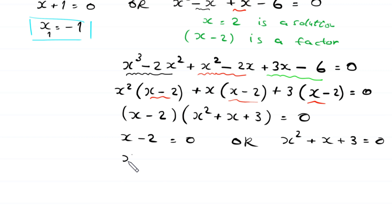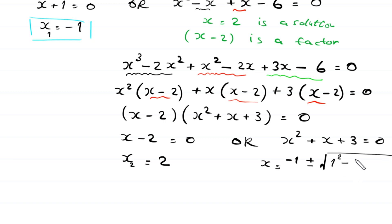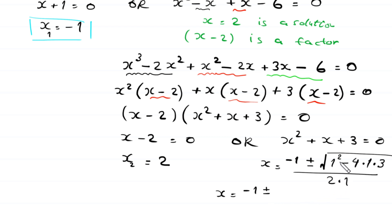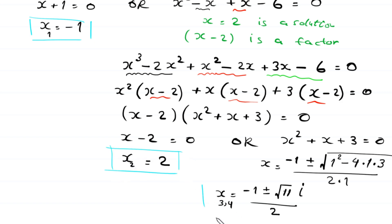From here either x minus 2 equals 0, giving the second solution x equals 2, or x squared plus x plus 3 equals 0. Applying the quadratic formula: x equals negative 1 plus or minus the square root of 1 squared minus 4 times 1 times 3, all divided by 2. This gives x equals negative 1 plus or minus root 11 times i, divided by 2. These are the third and fourth values of x.